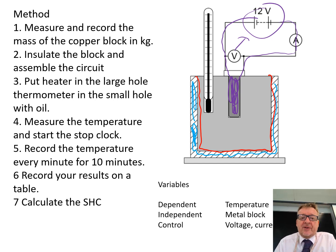So, the practical itself. Measure and record the mass of the copper block in kilograms. So you've got to get the mass of that block. Insulate the block and assemble the circuit. Put the heater in the large hole and the thermometer in the small hole with a little bit of oil, so you've got a little bit of oil in there, and that is just to make sure that the thermometer gets the accurate temperature. Measure the temperature at the start. Record the temperature every minute for 10 minutes. Record the results on your table. And then the whole point is to calculate your specific heat capacity.